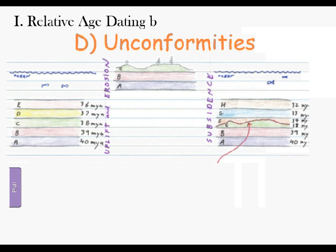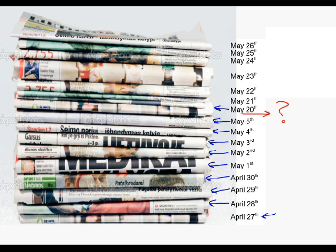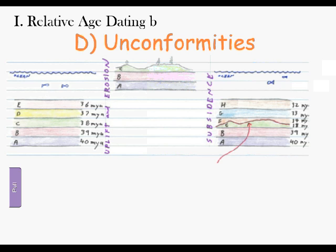Looking at the next page of your notes on relative age dating — we're still under the idea of not knowing exactly how old a rock is, but trying to figure out how old one rock layer is compared to others. We're going to focus on unconformities. If you conform, that means you follow the normal rules. We're going to look at situations that don't necessarily fit — kind of like these newspapers where something was missing or out of order.